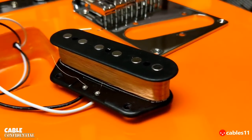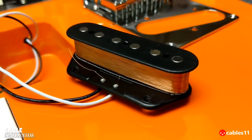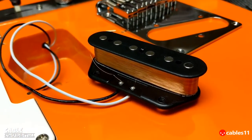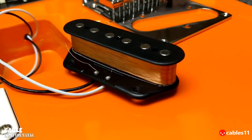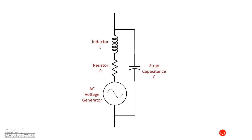When the guitar string is plucked, it vibrates within the magnetic field and causes a voltage to be induced in the pickup coil. Let's go to the whiteboard now and see that we can represent the pickup electrically as a voltage generator with a series resistor and inductor and a capacitor in parallel.